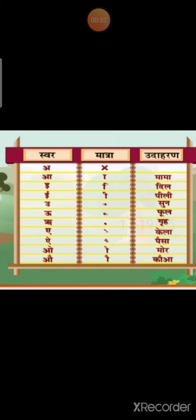In Varna Mala, we studied Swarakshar and Vyajanakshar. Again, Matrayim — how to write Matrayim — we have to learn. See, A say, A tak Matrayim. We can see Matrayim — Swarakshar ki Matrayim. There is no Matrayim for A, because instead of A, we are writing Ka; there is no Matra — Ka itself.